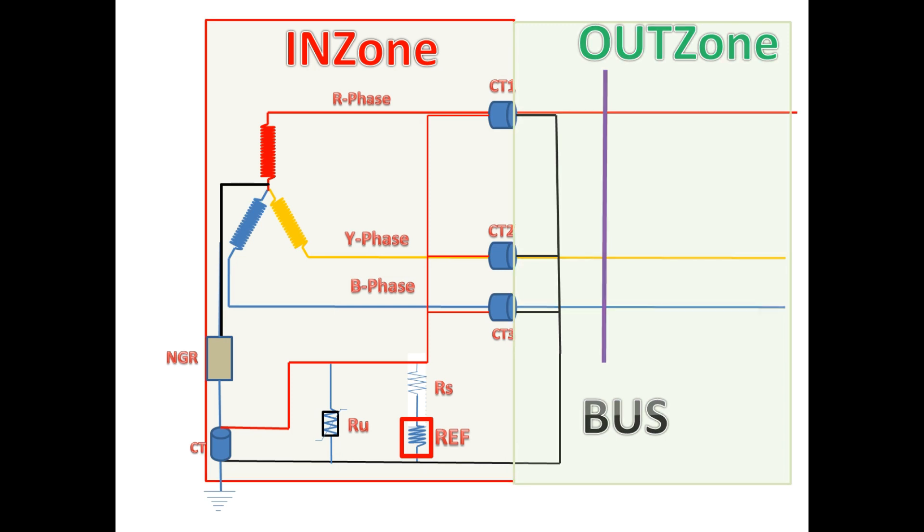If we look deeply at the IN-zone, it not only protects the transformer winding but also protects the section between the winding to CT area, but normally it is used for protecting the winding.